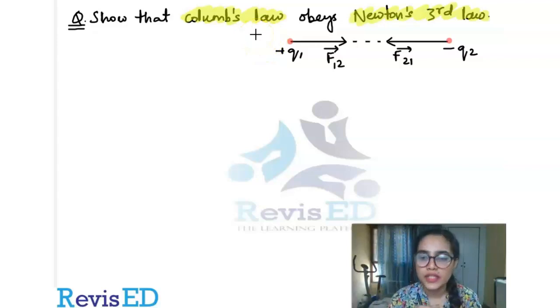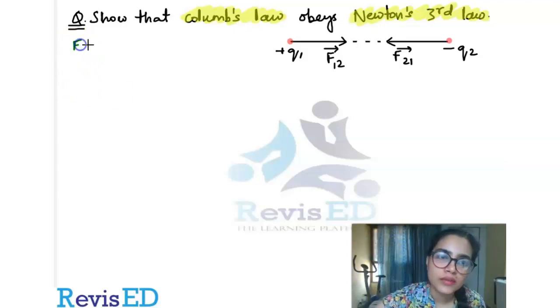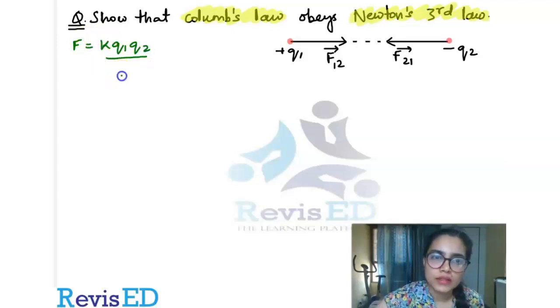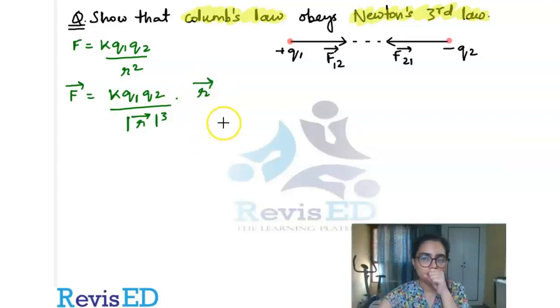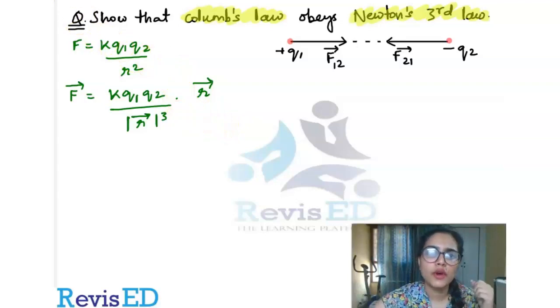First let us discuss Coulomb's law. Coulomb's law tells you the relation between the electrostatic force and charges. In scalar form we discussed this, but in vector form this force was KQ1Q2 by magnitude of R squared into your R vector. This was the formula.